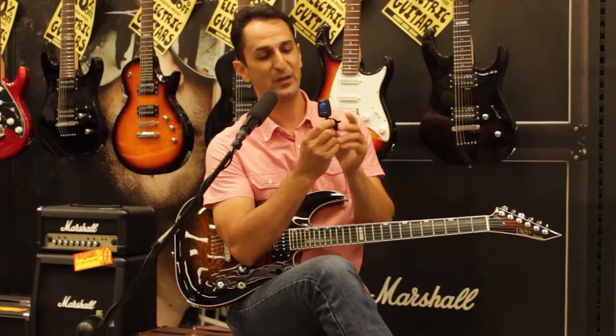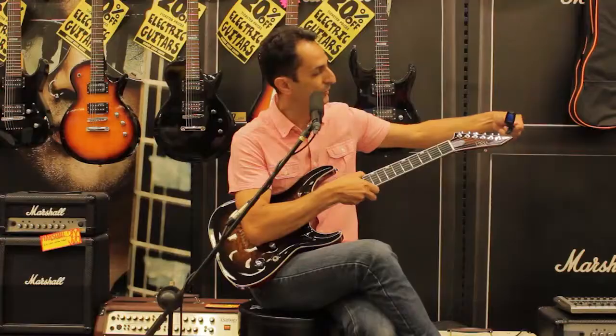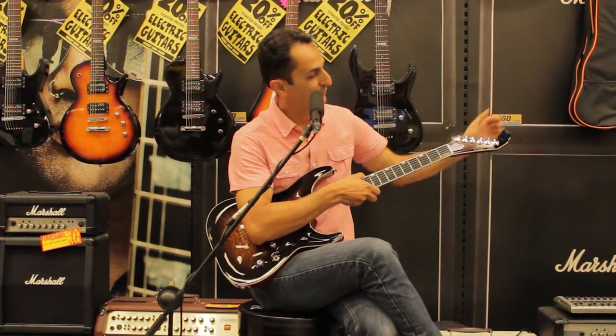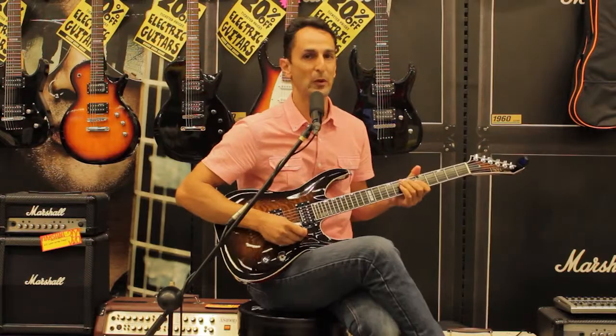So select G on that and then it's a very simple process of grabbing the tuner and clipping it onto the headstock of the guitar, or what they call the headstock of the top of the guitar.